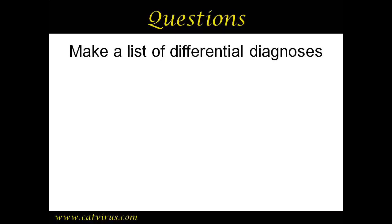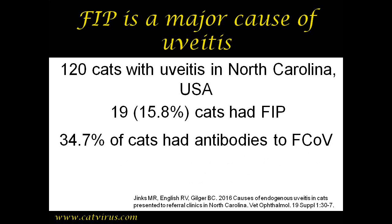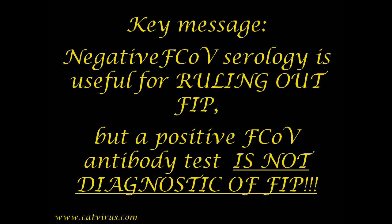The next question from part one was to make a list of differential diagnoses of uveitis, and I would hope that you put FIP on your list. Jinx et al. from North Carolina Veterinary School published a study of 120 cats with uveitis. 19 cats, i.e. 15.8 percent, were diagnosed with FIP. The average age of all uveitis cases was 7.62 years, while the average age of cats diagnosed with FIP was 1.82 years, which was younger than Tommy. Nearly 35 percent of the 120 cats had coronavirus antibodies — twice as many as had FIP. While negative coronavirus serology is useful for ruling out FIP, positive serology only indicates that FIP is possible. A positive antibody test is never diagnostic of FIP.